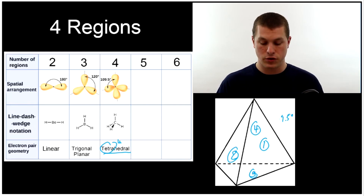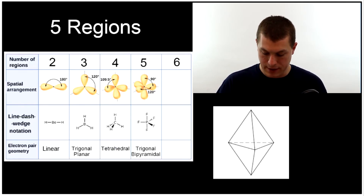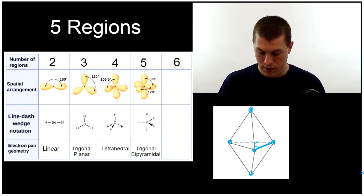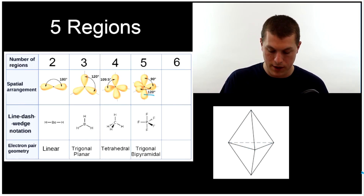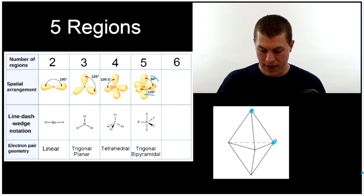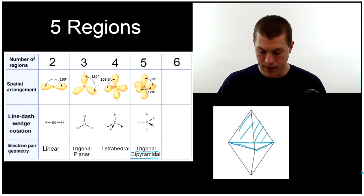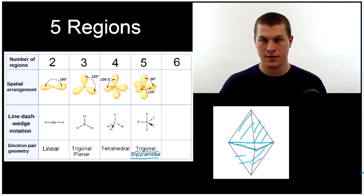The naming logic carries over to five regions of electron density. With five regions, the central atom sits in the middle with an atom at each vertex. There are actually two different bond angles: around the equatorial triangle it's 120 degrees, just like trigonal planar, and from the top to a corner on the equatorial plane it's 90 degrees. We call this shape trigonal bipyramidal — trigonal for the triangle, and bipyramidal because there's a pyramid on top and a pyramid on the bottom.